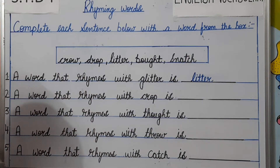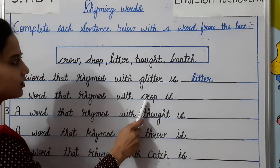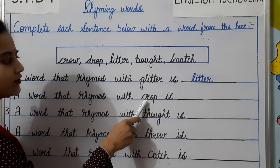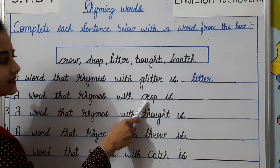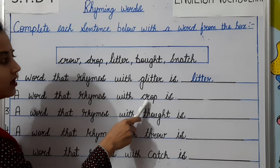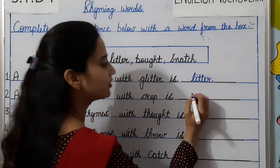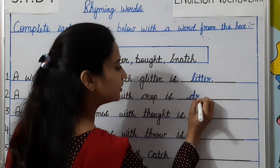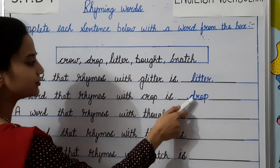Number 2: a word that rhymes with crop. You have to find out the same ending sound for crop. Crop — drop. Very good. So you will write here drop. Crop, drop.